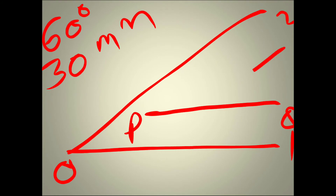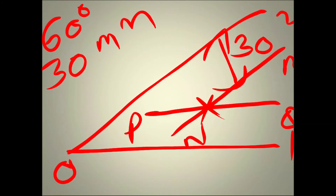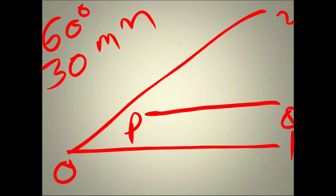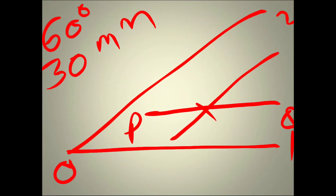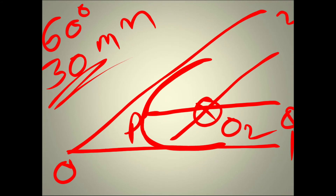Similarly, for straight line two, draw a parallel line at a distance of radius 30 mm. Name this line NM. These two parallel lines meet at a point — this is point O2. With point O2 as center and radius equal to 30 mm, draw an arc. This is the tangential arc for two straight lines at an acute angle.